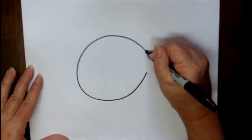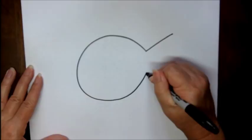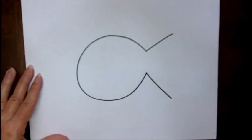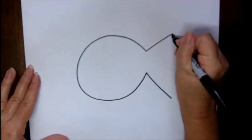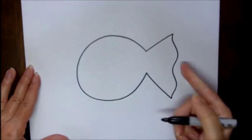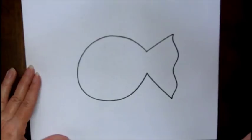At this point we're going to draw two straight lines that come out that are slanted from the opening of the circle. We're going to connect those with a wavy line. That's going to be the fish's tail and this is his body.